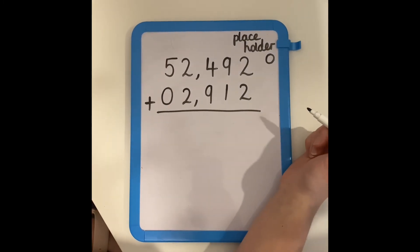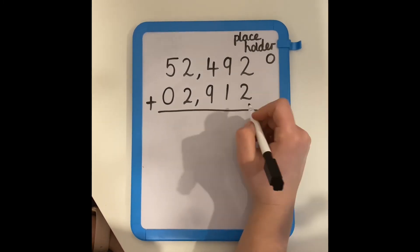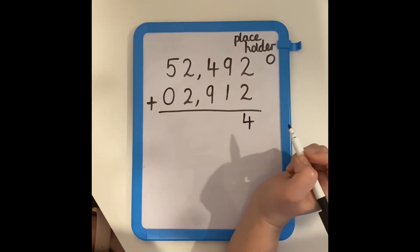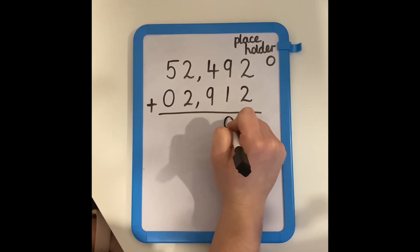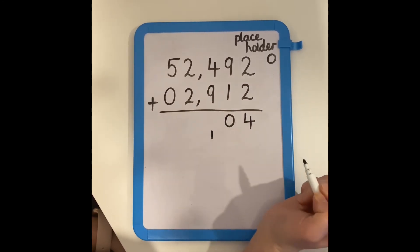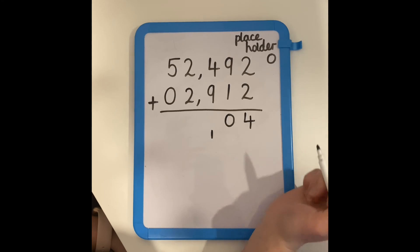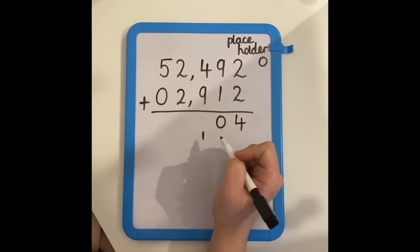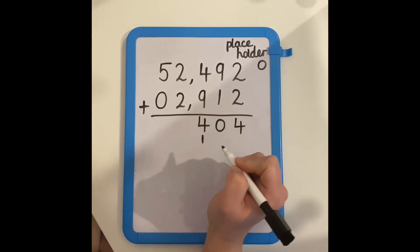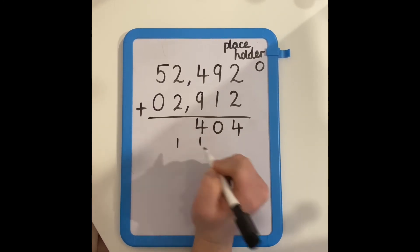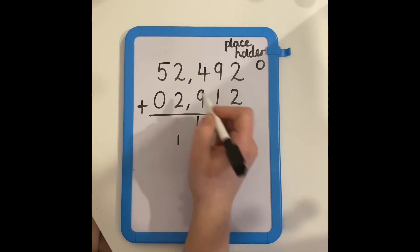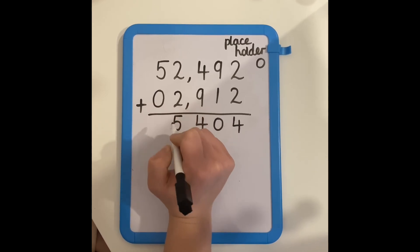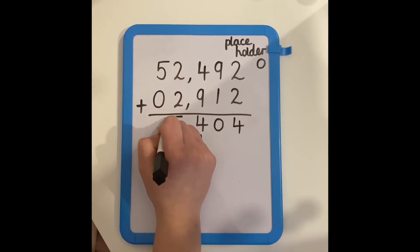I know that two add two equals four. I know nine add one equals ten, so I put my zero in the tens column and carry the one over to the hundreds. I know that nine add four is 13, but remember I carried one from the tens, so that's going to be 14. I now need to carry one over to the thousands column. I know that two add two is four, add one more makes five.